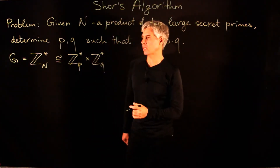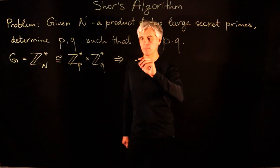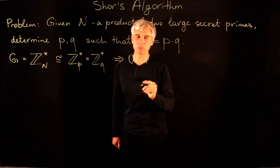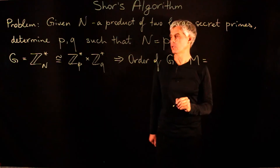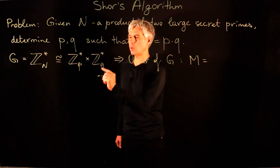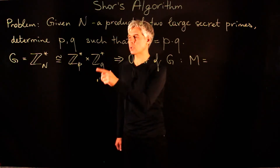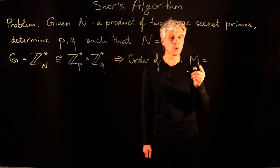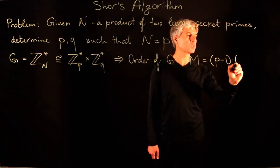But we know that such a factorization exists. The order of the group, the number of elements, is m, which is the product of the orders of these groups. Since p and q are primes, the group of multiplicative remainders mod a prime has order p minus 1. So the order of this product is (p−1)(q−1).